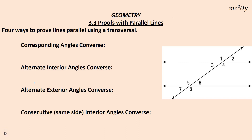We're going to move on to 3.3, proofs of parallel lines. There are four different ways we can prove lines parallel using a transversal. We have our transversal, and we don't know that the lines are parallel. Let's go ahead and call this line L and this one line M.